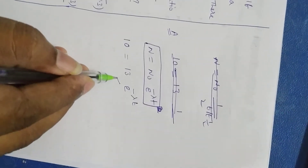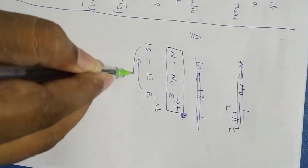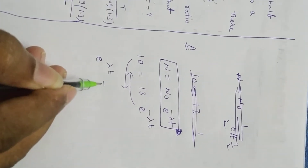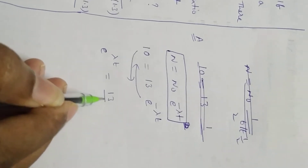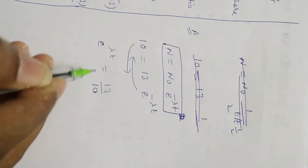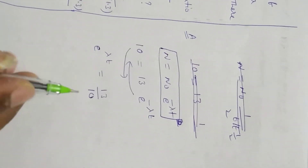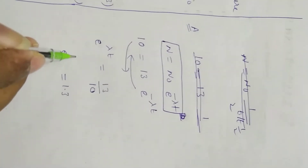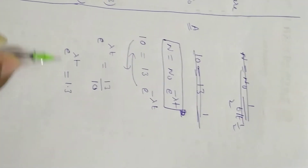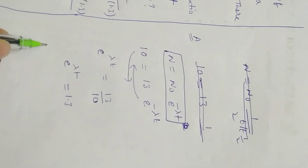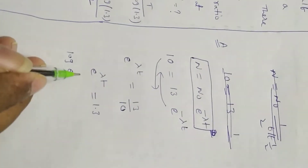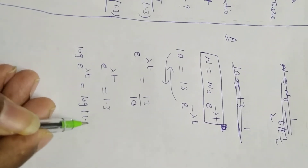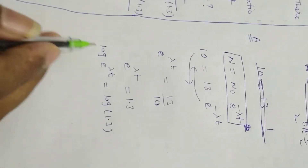Here, moving minus to the other side as plus, and rearranging, finally we get e power lambda t equal to 13 by 10. Neatly written, on the right side we get 1.3 - e power lambda t equals 1.3. Both sides I take logarithm: log of e power lambda t equal to log of 1.3.